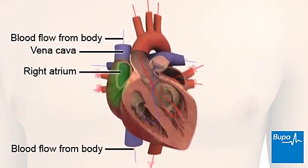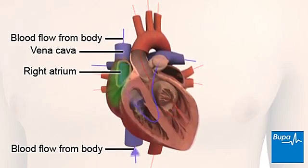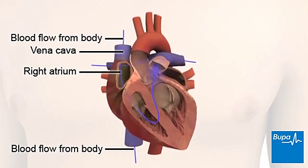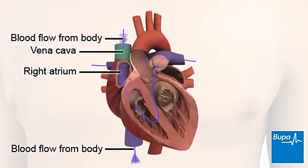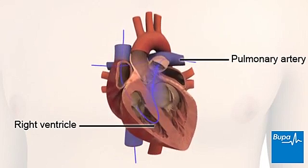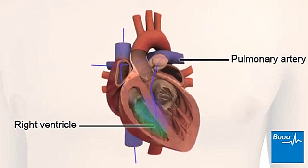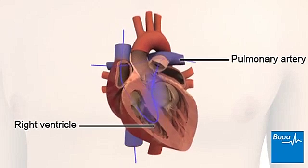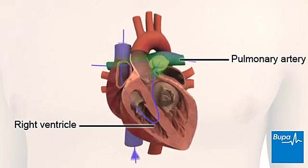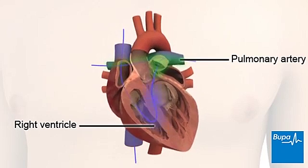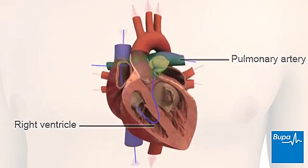The right atrium receives blood with little oxygen from the body via the vena cava. This blood passes into the right ventricle, which pumps it into the pulmonary artery and back to the lungs to have oxygen added to it.